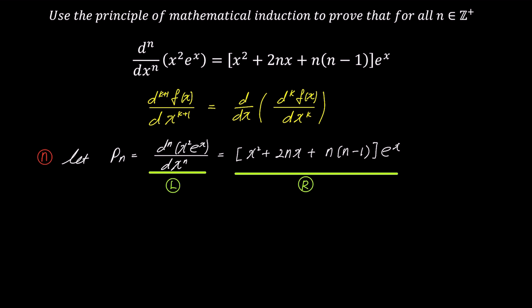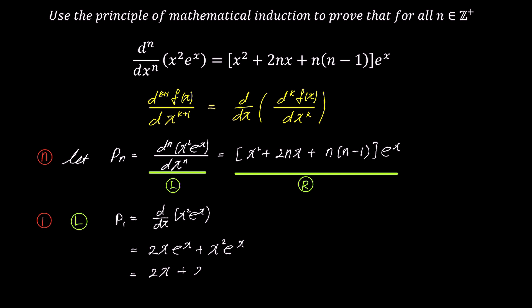Now let's move on to the next step, 1, and check if P sub 1 is true. The left side, P sub 1, is the first derivative of x squared times e to the power of x. Using the product rule, its derivative is 2x times e to the power of x plus x squared times e to the power of x. Factoring out the common factor e to the power of x, it becomes (2x plus x squared) times e to the power of x.